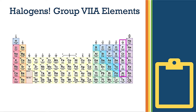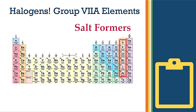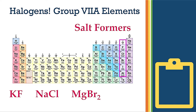First, let me tell you what halogens are. These are Group 7 elements; you can see their position in the periodic table. They are known as halogens, and the word 'halogen' means salt former because they can form salts. Some examples of these salts are potassium chloride, sodium chloride, magnesium bromide, and calcium iodide. In every salt, one halogen is present. The most common halogens are fluorine, chlorine, bromine, and iodine.